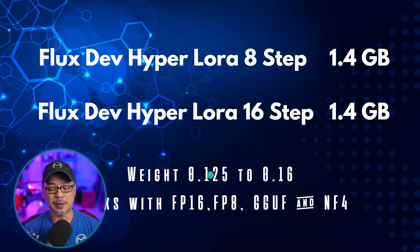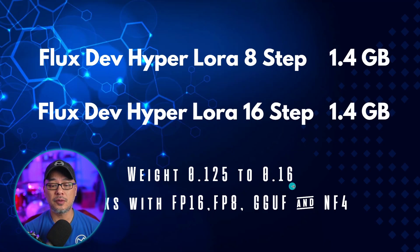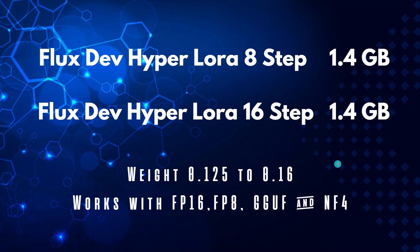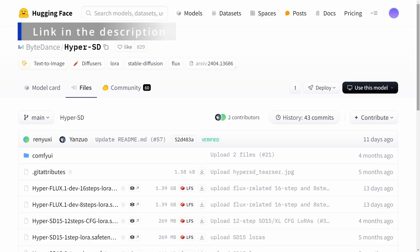It's recommended to use a weight of 0.125 to 0.16, and you can use them with any of the dev models — whether it be the FP16, FP8, GGUF, or the NF4. I'll leave a link in the description to a Google Doc that includes all the other dev models as well as these Hyperloras. This was done by ByteDance.